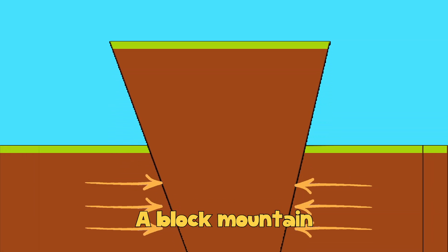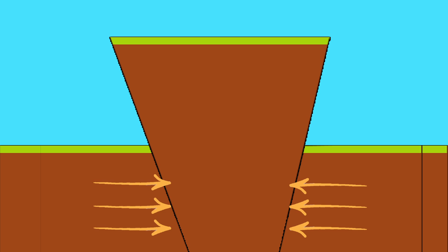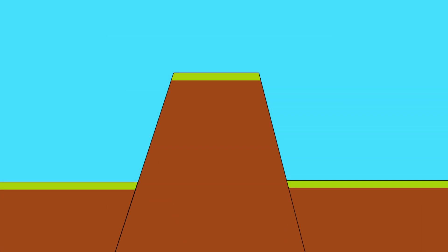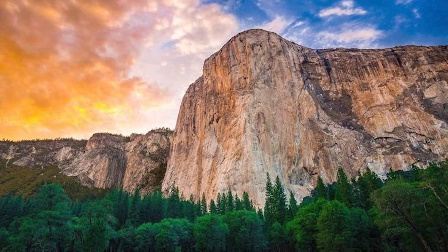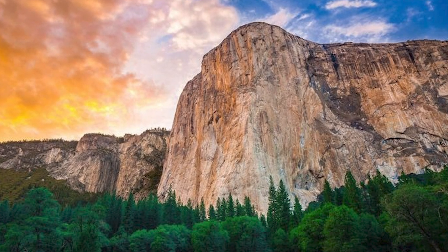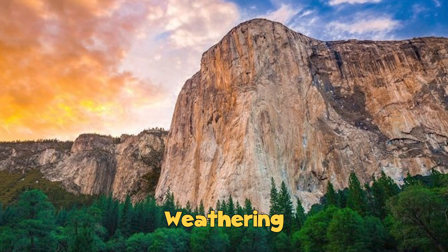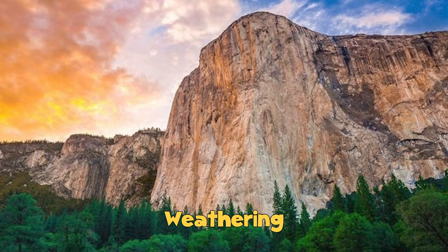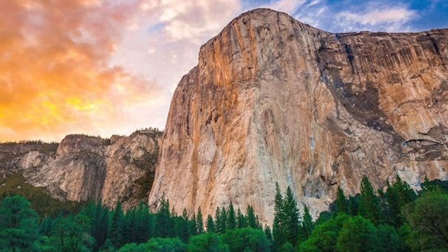Block mountains do not typically appear in this shape because over time the side rocks have been broken down by wind and water through a process known as weathering, to produce the present day appearance of block mountains.